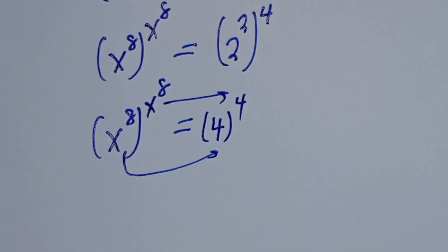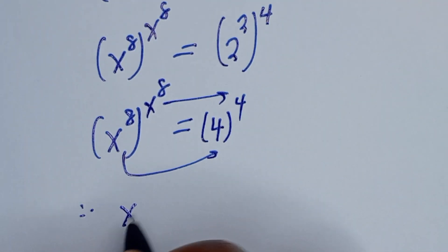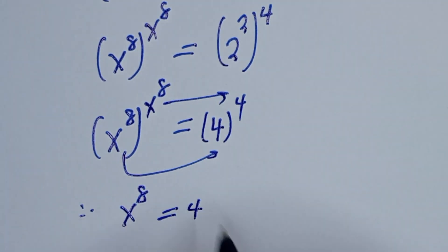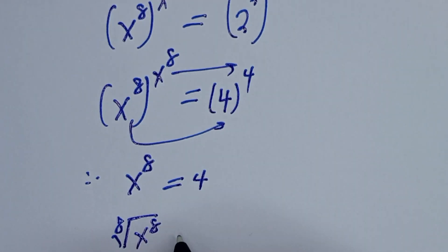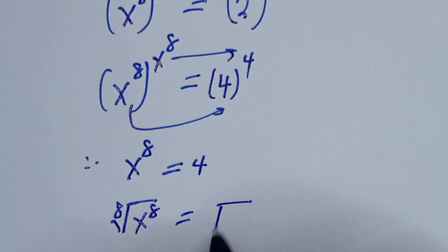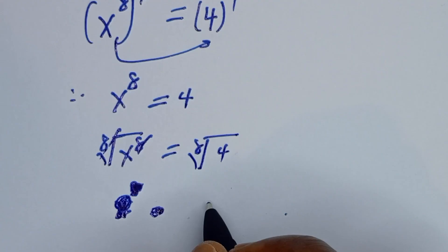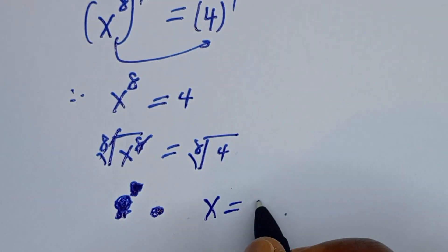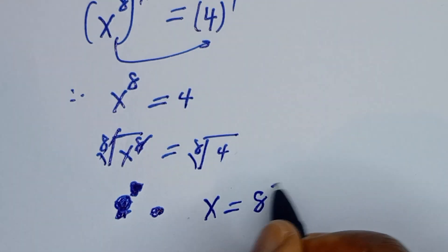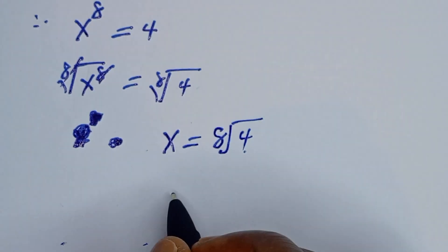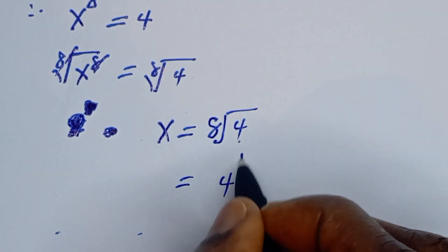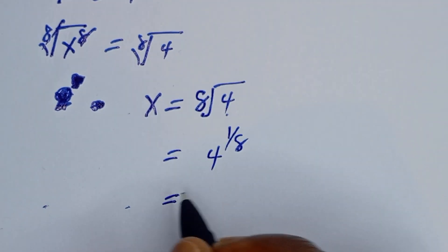By comparing both sides, s to the power of 8 is equal to 4. Then let's take the 8th root of both sides. The 8th root of s to the power of 8 is equal to the 8th root of 4. This simplifies to s is equal to 4 to the power of 1 over 8.